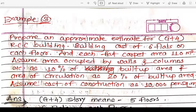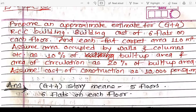Assume the area occupied by walls and columns as 10% of the built-up area, and the area of circulation as 20% of the built-up area. Assume the cost of construction as rupees 10,000 per square meter. In this problem, the RCC building has 5 floors — ground floor plus 4 floors.